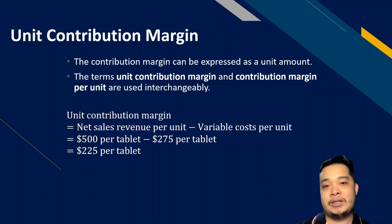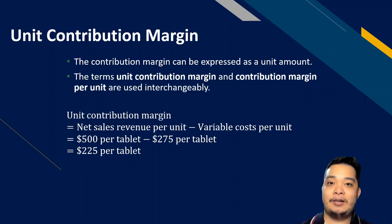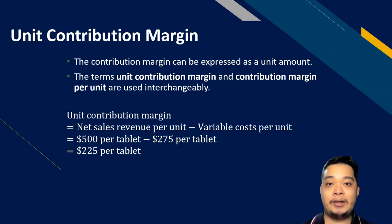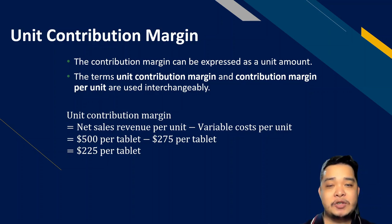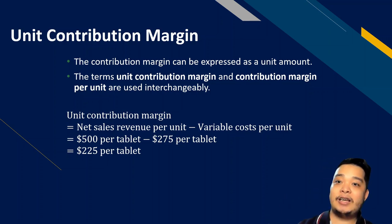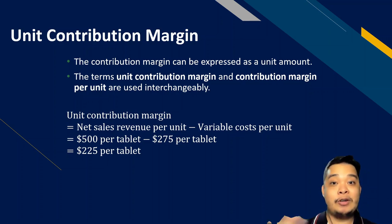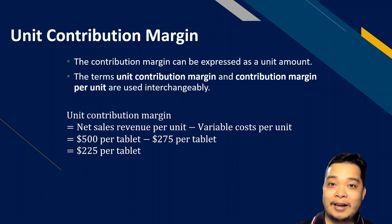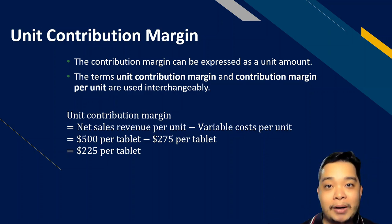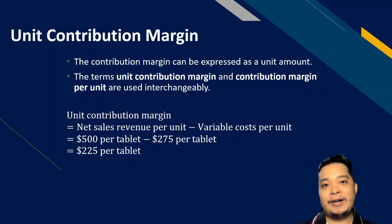On a marginal basis, for every product you sell, the unit contribution margin is the net amount going into the business. As long as it's positive, selling something is better than nothing. If the contribution margin is negative, it's not worth selling because the additional variable cost cannot be recovered — you incur a loss on every unit.